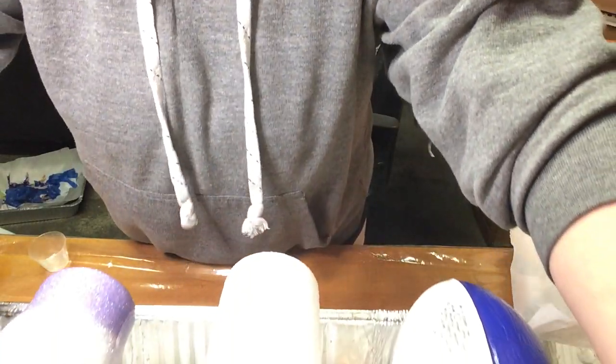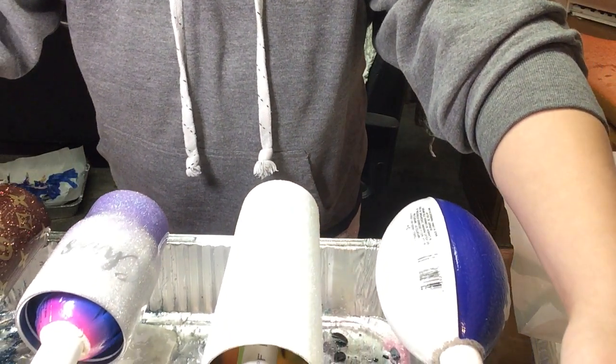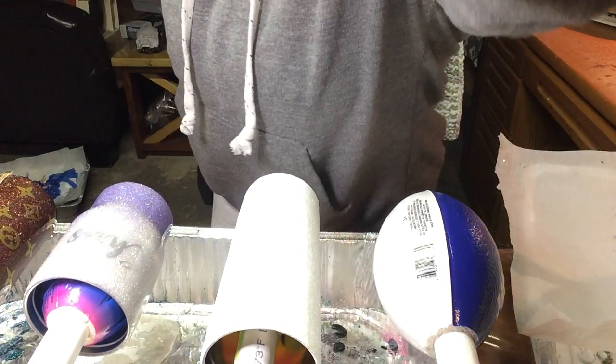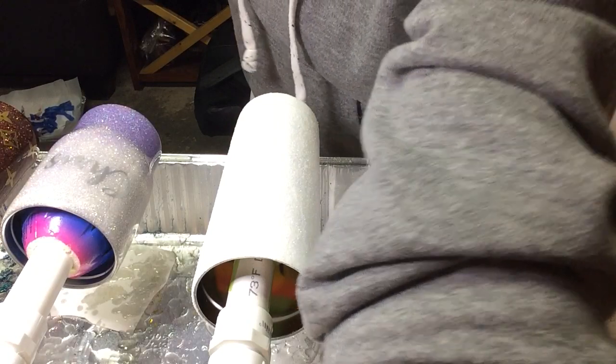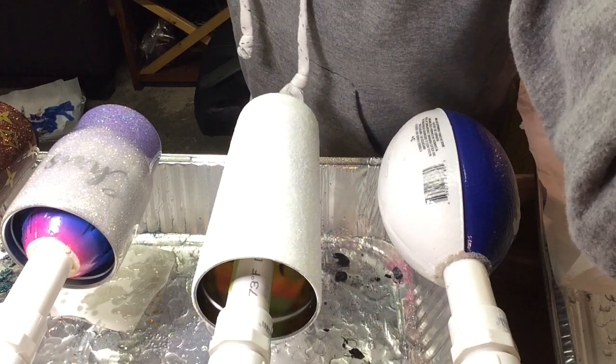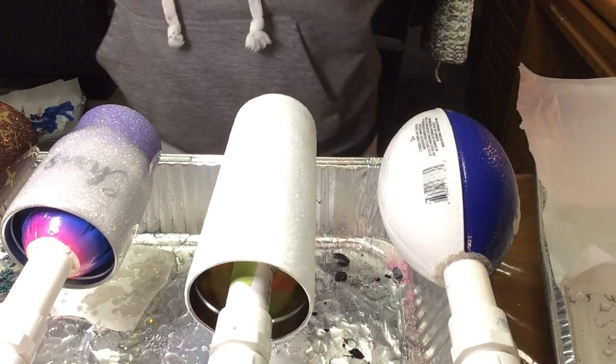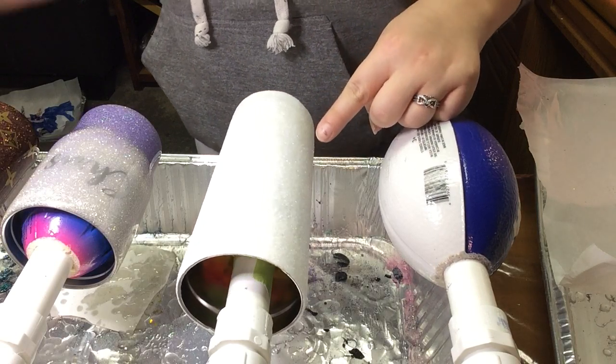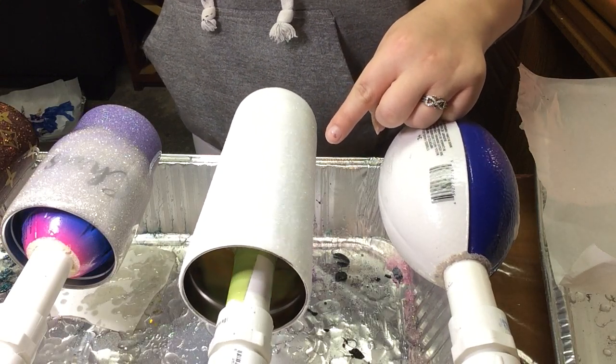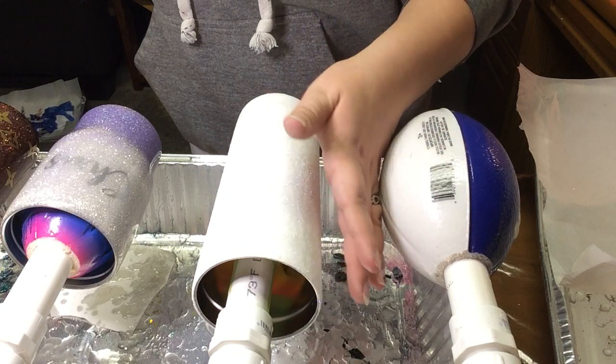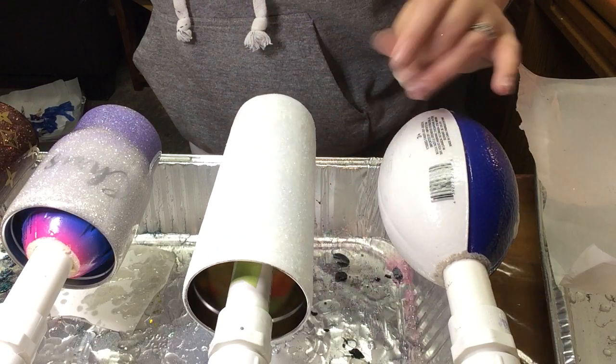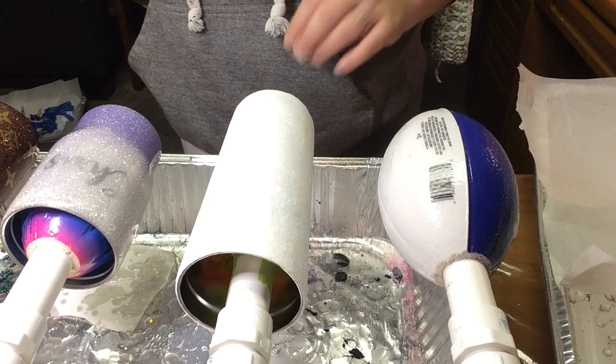I do have one here that I did with this method. This one has three coats of the acrylic white craft paint on it and then two coats of the glitter done epoxy method. And it turned out beautiful.